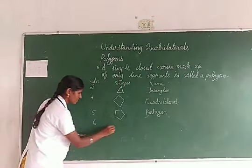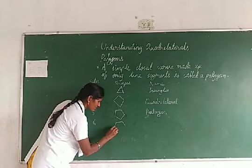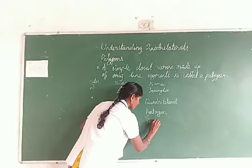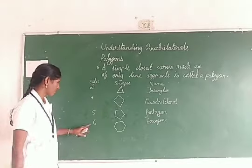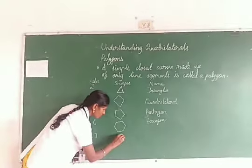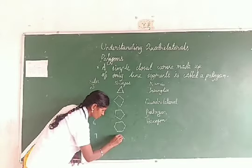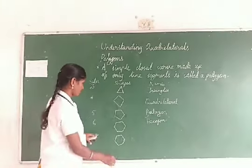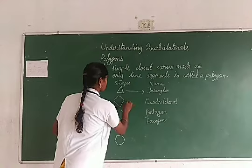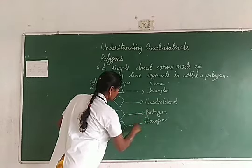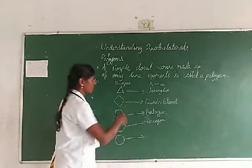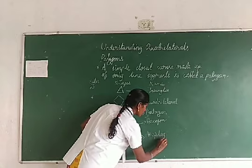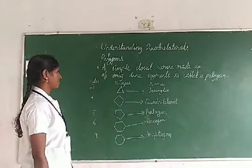Six sides — next one. If there are six sides for the shape, that is hexagon. Seven sides — next one. If there are seven sides, that is heptagon. If there are eight sides, that is octagon.